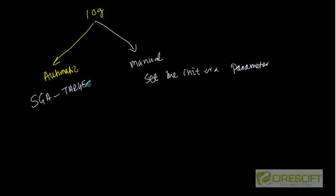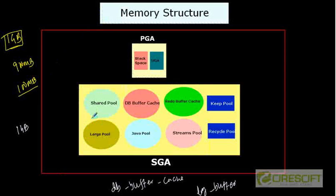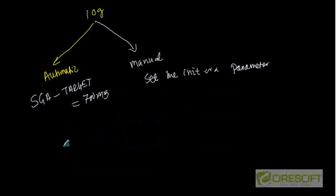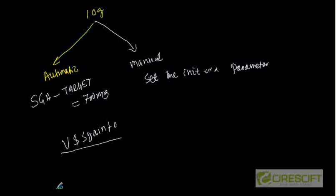Let's say you set SGA_target to 700 MB. In that case, all these pools are going to be set to a default value and then keeps changing dynamically depending on the workload. One thing is that not all these pools can be changed dynamically. There are certain pools that can be changed dynamically, and you can take a look at a table called V$SGA_info. In V$SGA_info, if you query, you will find out which pools are resizable.